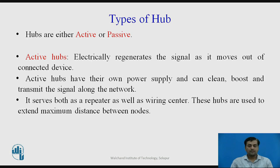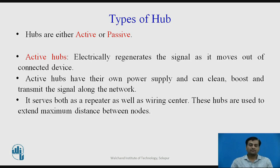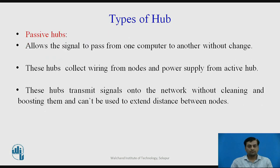Hubs are either active or passive. An active hub electrically regenerates the signal as it moves from connected devices. Active hubs have their own power supply and can clean, boost, and retransmit the signal along the network, serving both as a repeater and a wiring center. Active hubs are used to extend the maximum distance between nodes.